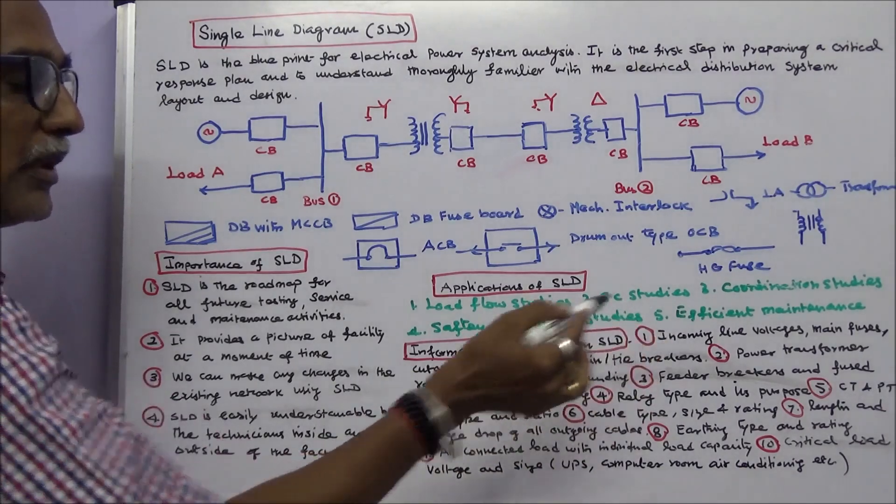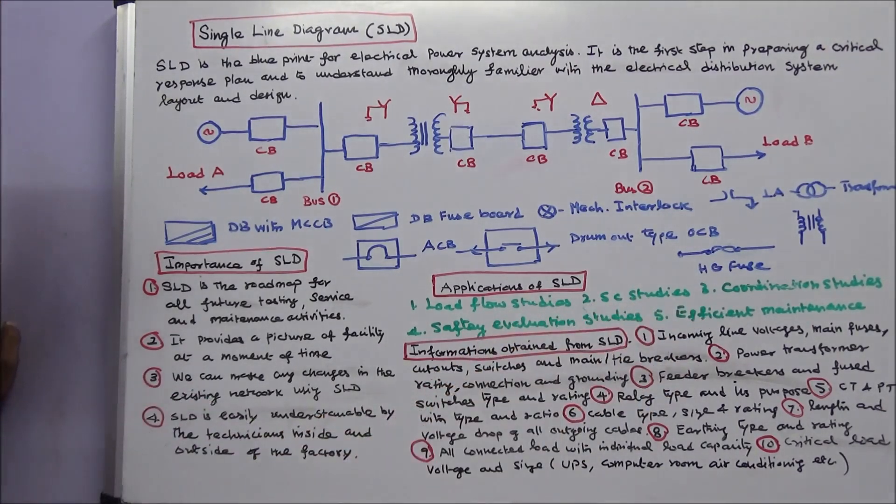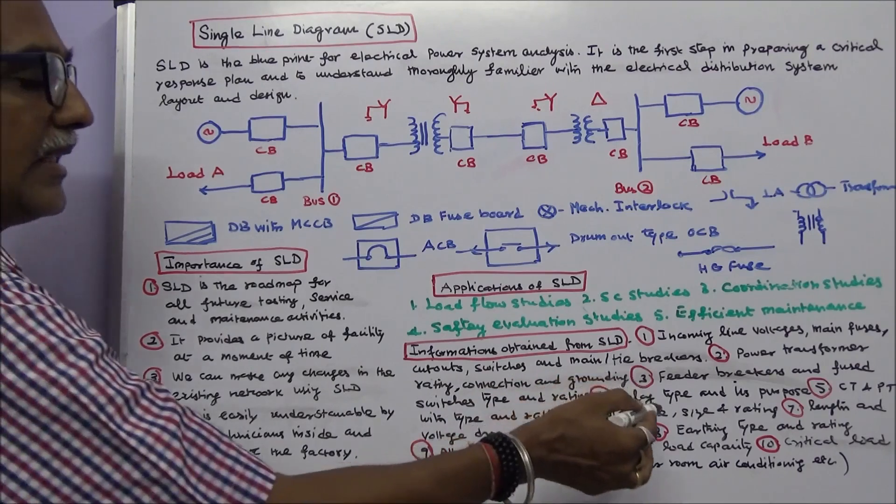Number four, relay type and its purpose. Number five, current transformer and potential transformer with type and ratio. Number six, cable type, size, and rating.